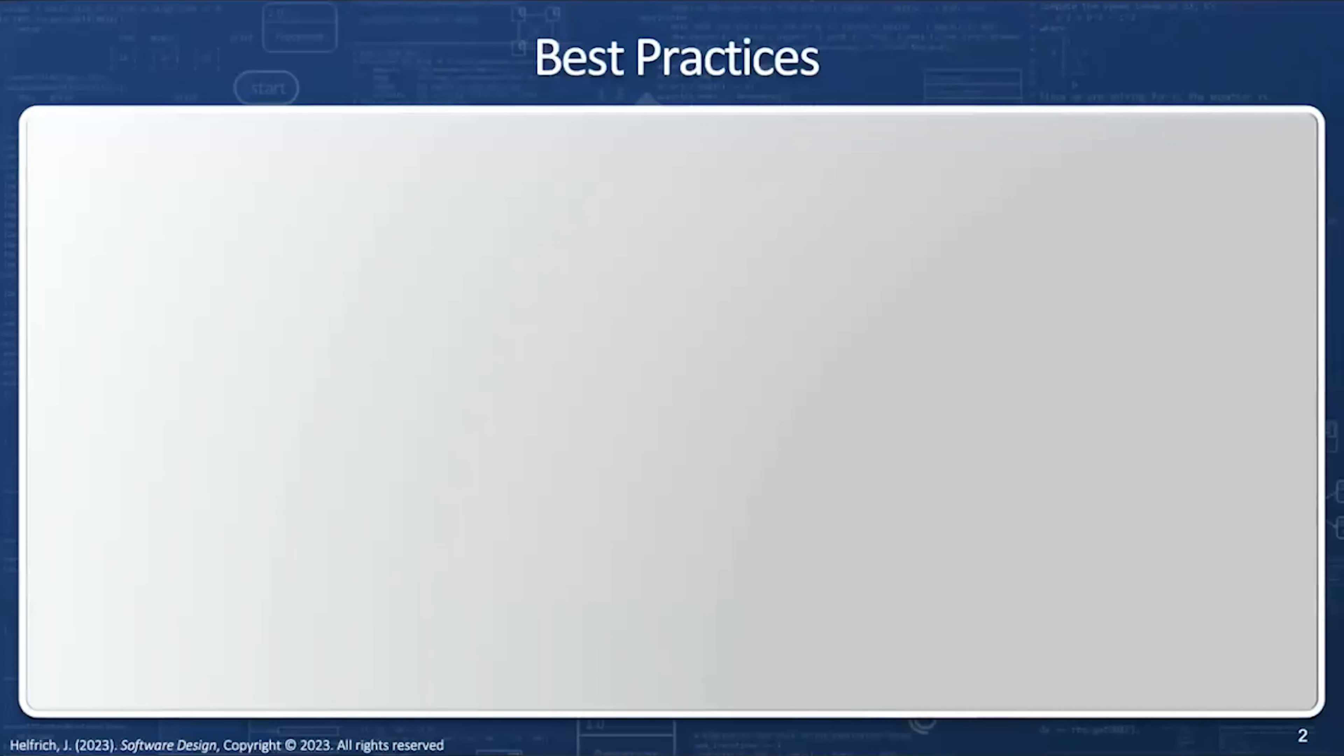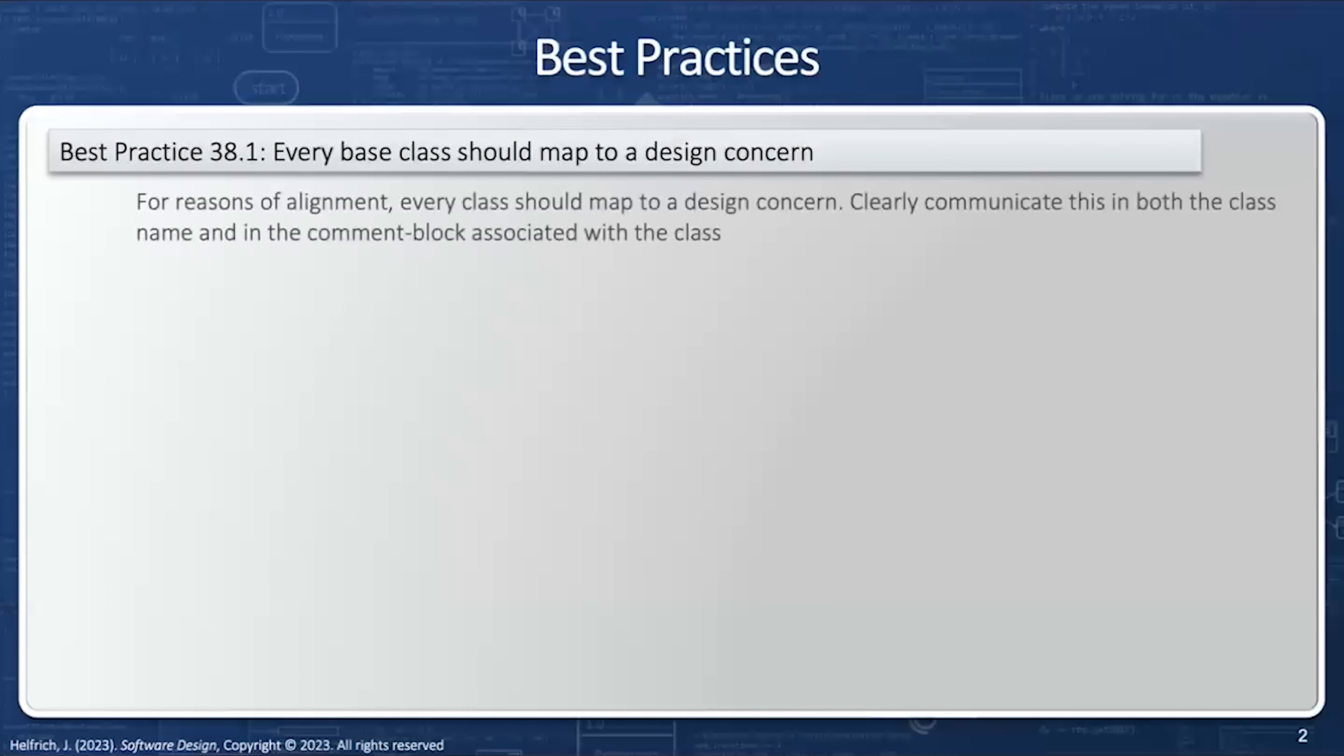There's a few best practices when we're working with large inheritance trees. Number one is every base class should map to a design concern. For reasons of alignment, every class should map to a design concern. Clearly communicate this in both the class name and the comment block associated with the class.